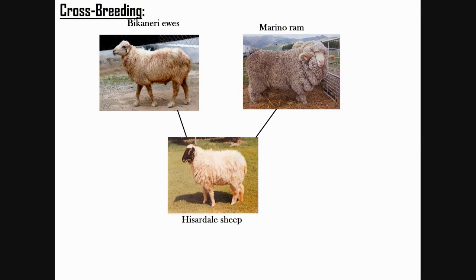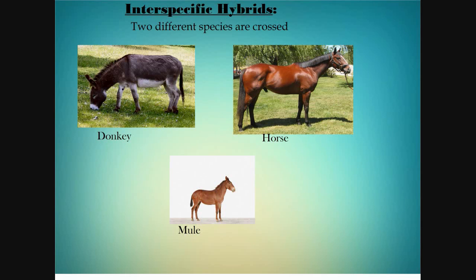In crossbreeding, super female and super male of two different breeds are crossed, by which desired qualities are obtained and many new breeds can be produced. An example is Hisardale, which was obtained by crossing Bikaneri ewes and Merino rams. In interspecific hybrids, male and female from different species are crossed.